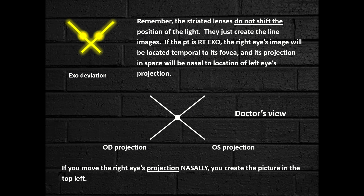As with Maddox rods, Bagolini lenses do not shift the location of the light. They just change the form of the light stimulus from a spot of light to a line of light. Oftentimes we can still see the spot of light as well as the line, because the lenses are clear and the line markings on the lens are very faint.